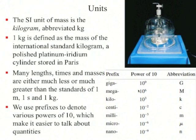Giga means ten to the nine. Mega is ten to the six, or a million. Kilo is ten to the three, or a thousand. Centi is a hundredth. Milli is a thousandth. Micro, represented by the Greek letter mu, means a millionth. And nano is a billionth.